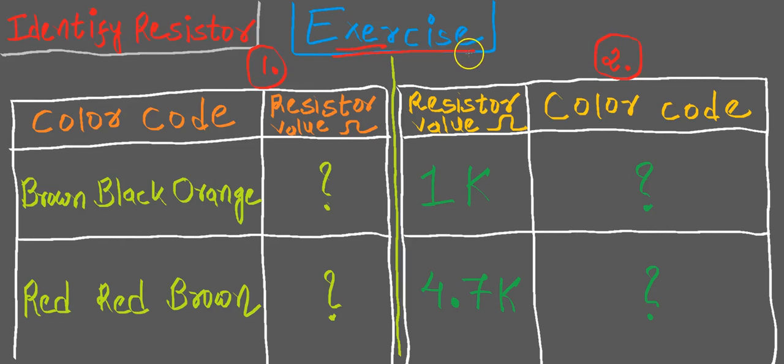It has two parts and you need to identify the resistor. Part 1 provides you the colors of bands and you need to write the correct value of the corresponding resistor.